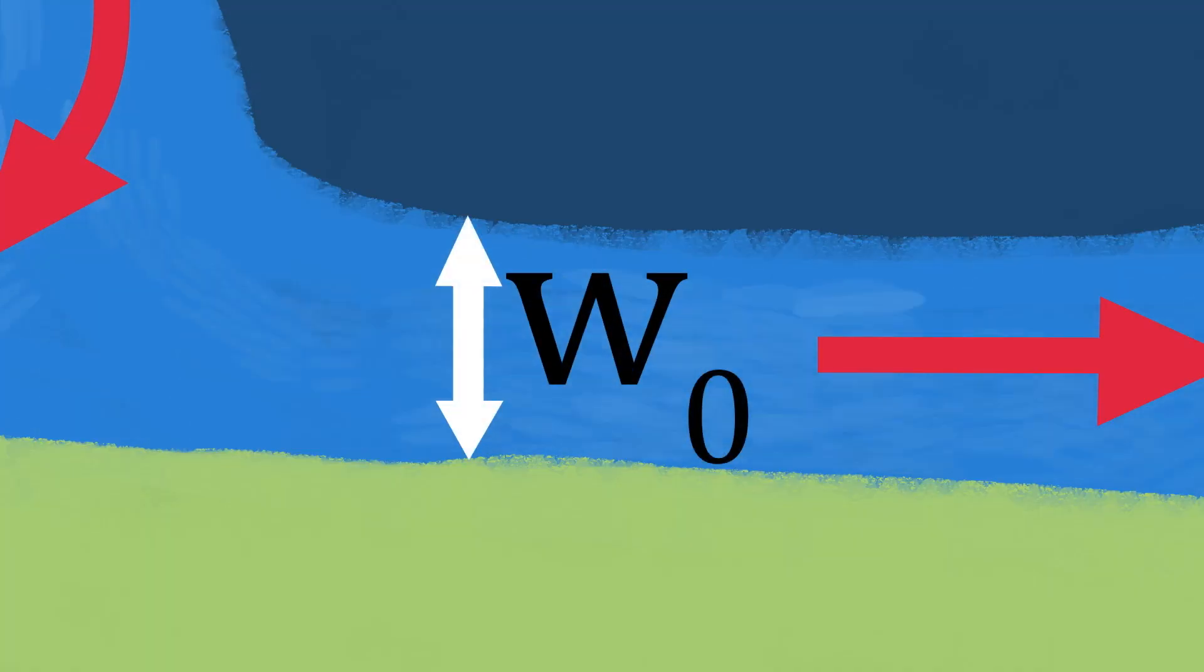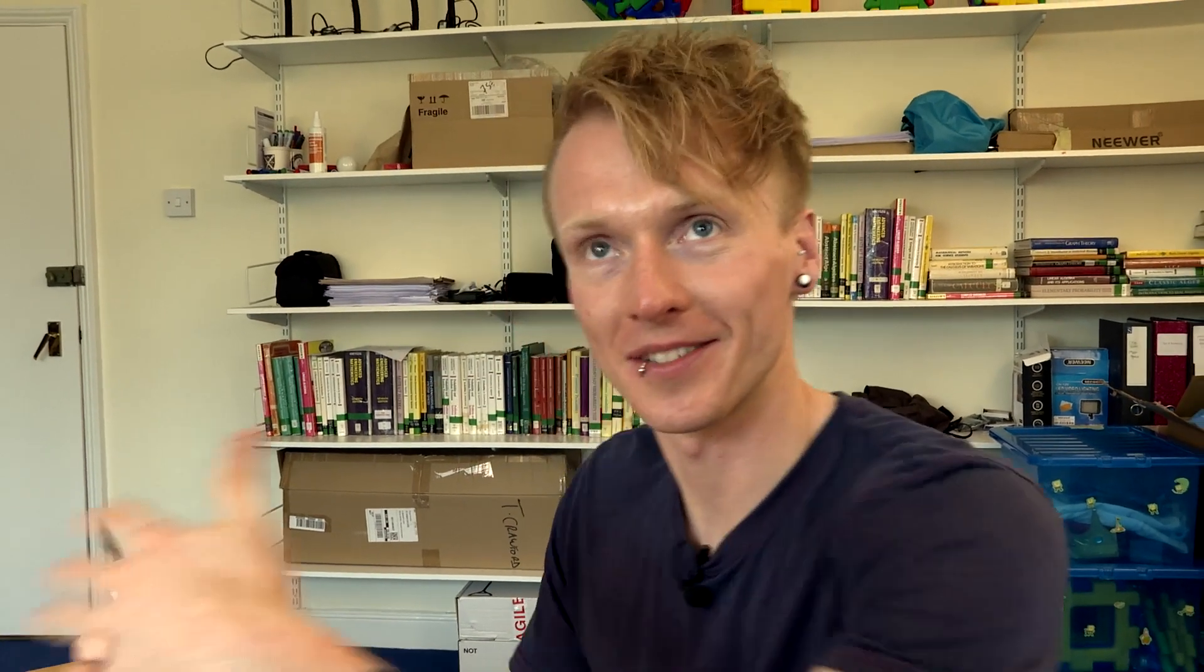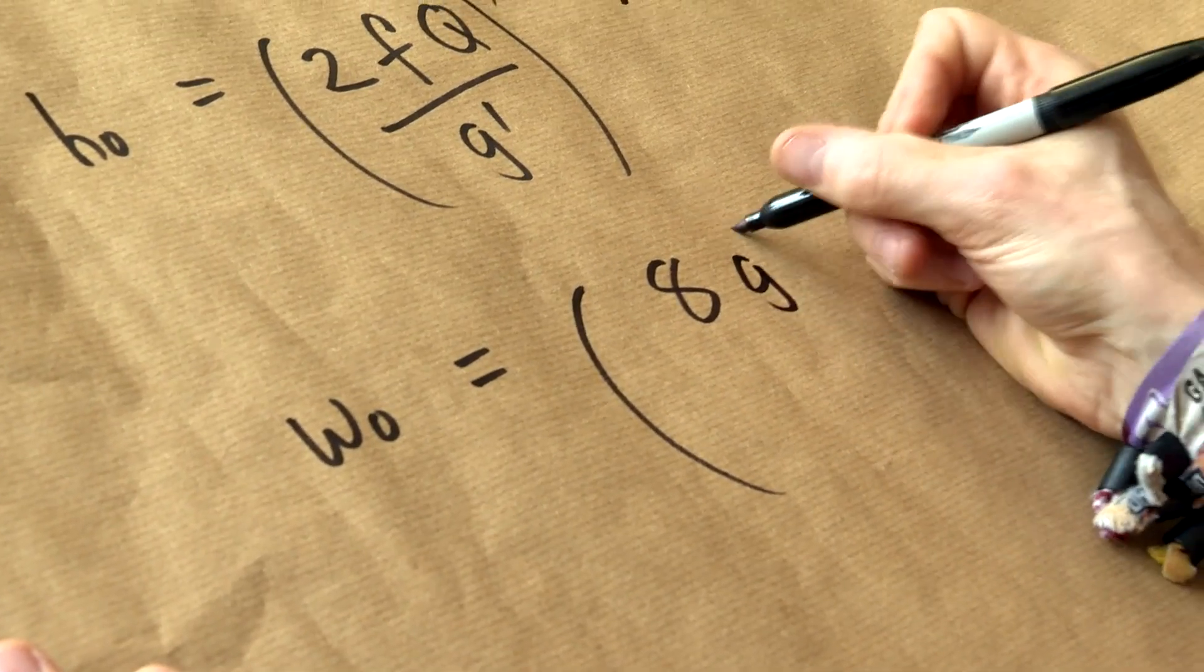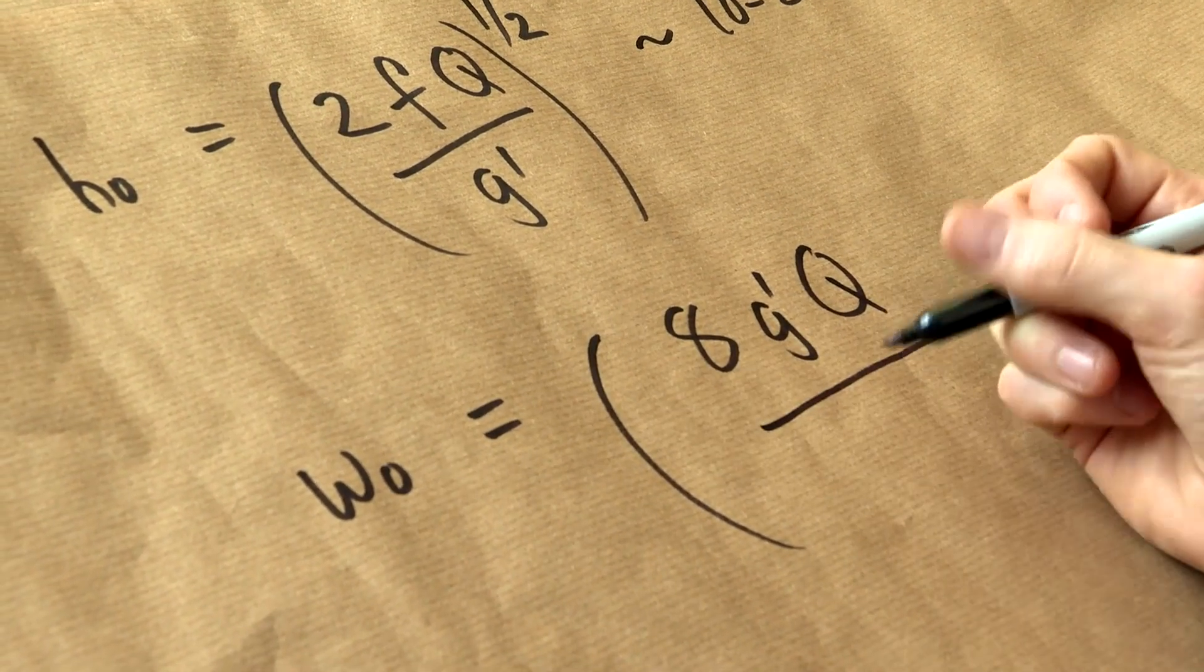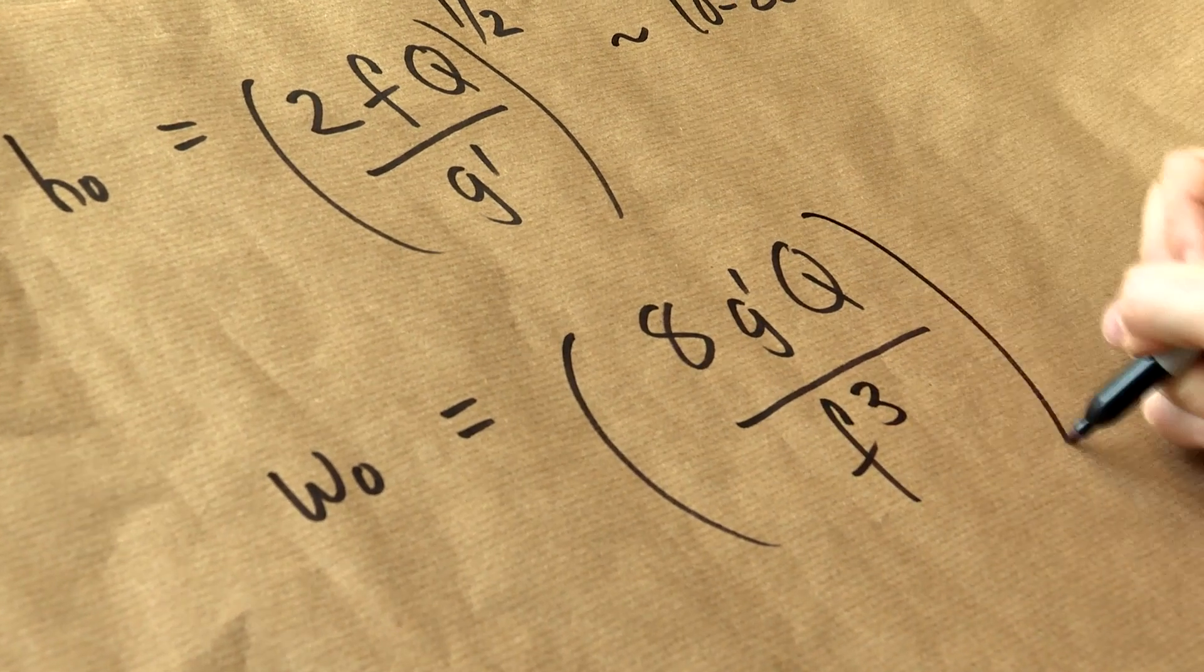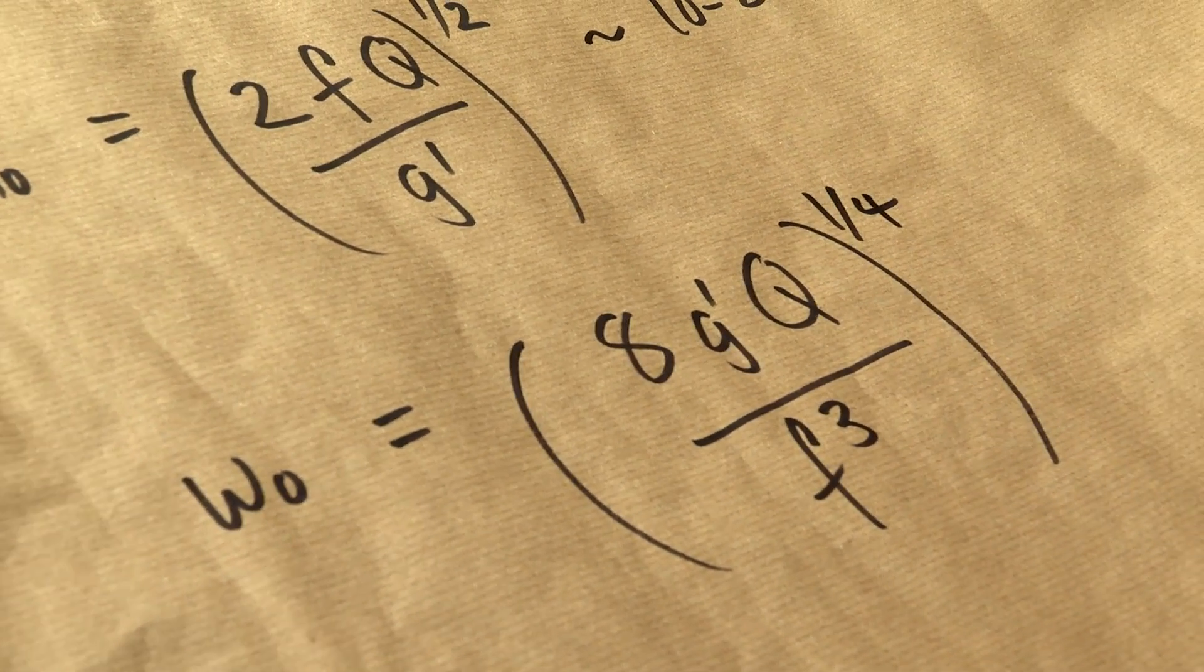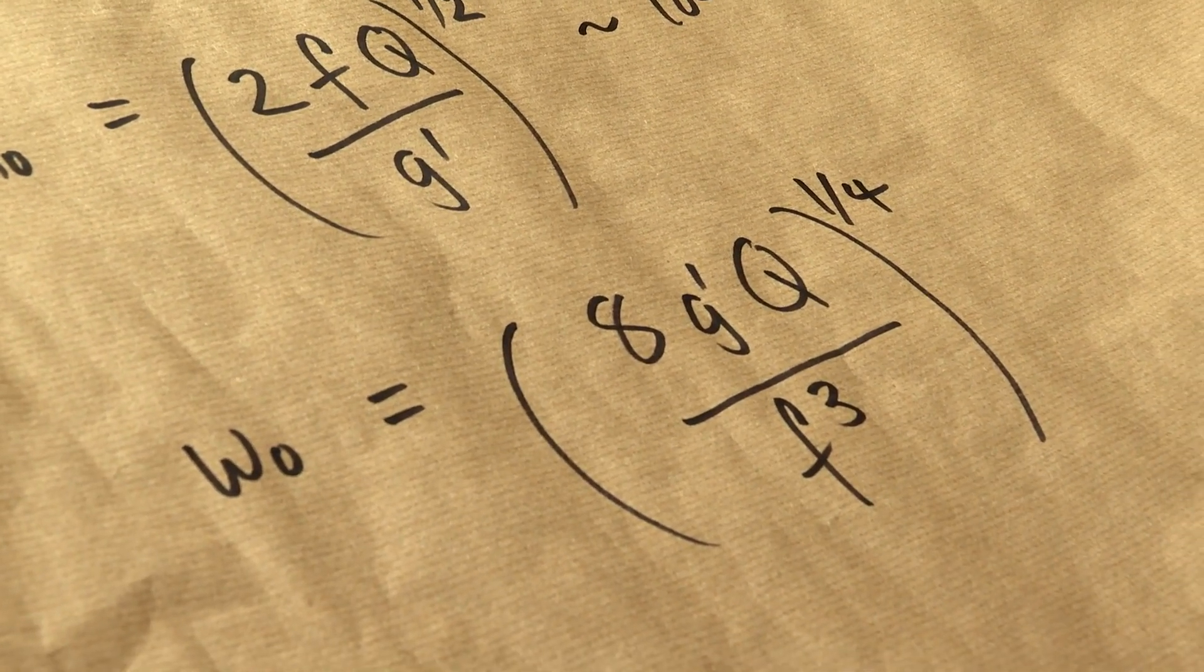Then we also get the width. The width is important because we want to know how far offshore to clean up. Thinking practically, we want to know, do we clean up 10, 20 kilometers out to sea, or do we have to go all the way out 100 kilometers? And we get a really neat formula for the width. W naught, we've got an 8 this time, G prime Q, divided by F cubed, all to the 1 quarter.